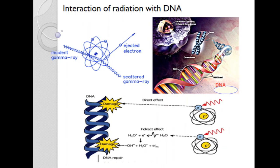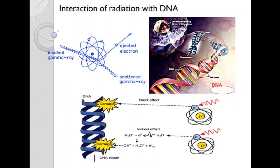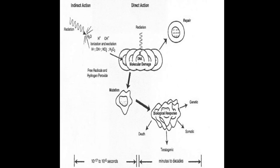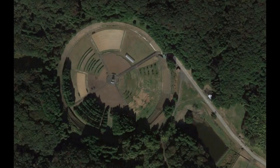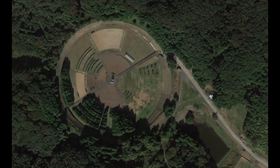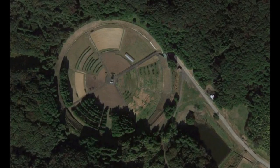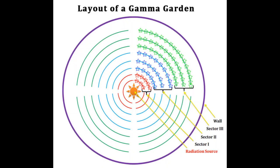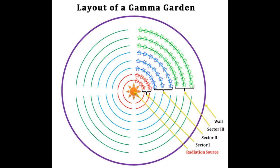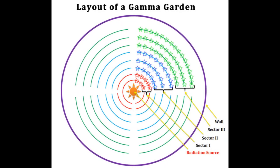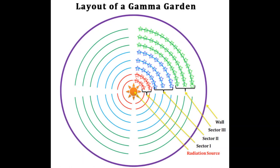Exposure to radiation causes mutation in all living beings. Mutation process can be accelerated by gamma irradiation. Plants are exposed to gamma irradiation in facilities called gamma gardens. In a typical gamma garden, the radiation source is located in the center and plants to be irradiated are arranged in concentric circles around the source.